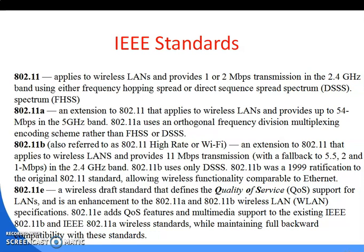802.11a uses an orthogonal frequency division multiplexing (OFDM) encoding scheme rather than FHSS or DSSS. 802.11b, also referred to as 802.11 High Rate or Wi-Fi, is an extension of 802.11 that applies to wireless LAN and provides 11 Mbps transmission with a fallback to 5.5, 2, and 1 Mbps in the 2.4 GHz band. 802.11b uses only DSSS and was ratified in 1999 to the original 802.11 standard, allowing wireless functionality comparable to ethernet.